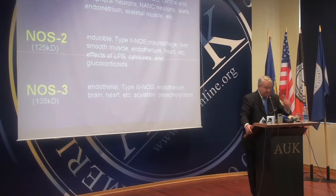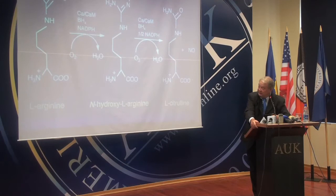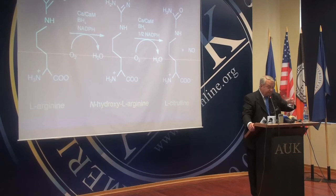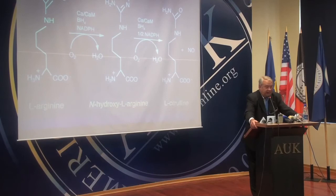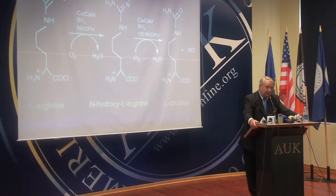What they do is they convert an amino acid, L-arginine, which is an essential amino acid in our diet. There are some substances, like vitamins and some amino acids, where the body doesn't make enough — you have to have them in your diet. L-arginine is one of those substances. The terminal guanidino nitrogen of L-arginine is oxidized to form an intermediate, hydroxyarginine, and this is then converted to citrulline and nitric oxide. That's how it's made.